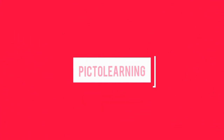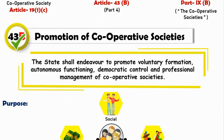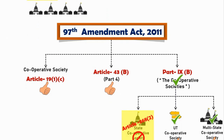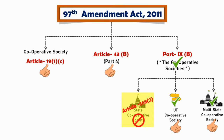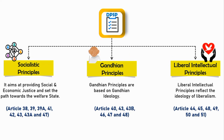Hello everyone, my name is Priya and I welcome you all back to my channel. I hope you all are doing great. In the last video, we discussed Article 43B, that is promotion of cooperative societies, and had also discussed the status of the 97th Amendment Act of 2011 in present time. If you haven't seen that video yet, then the link is given in the description box. In today's video, we will be discussing about Article 44. As per the categorization of Articles of DPSP, Article 44 comes under Liberal Intellectual Principles.